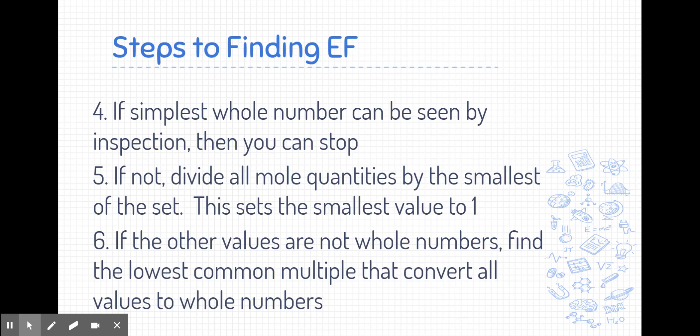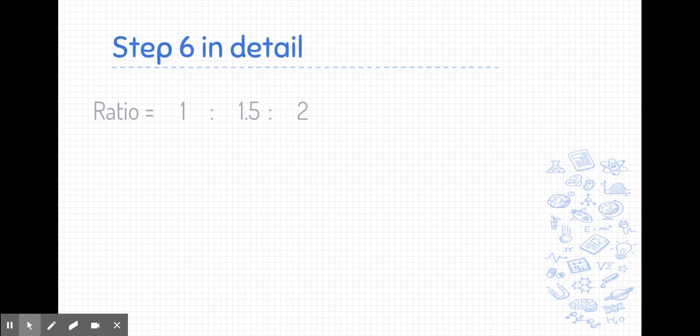Now, we didn't need to do step number six in that example problem. So let's just look at how that works with ratios. Let's just imagine we have found the mole ratio. We've set the smallest value to 1 and we get something like this, a 1 to 1.5 to 2 ratio. So we have three different elements in this compound. What I'm going to do is just by trial and error, or just by inspection if you can see it, is find a whole number that we can multiply all of these numbers by that will give whole numbers for all of these.